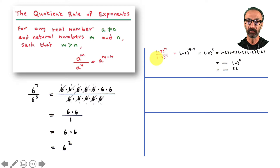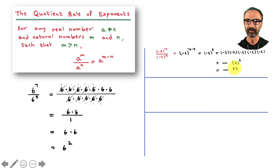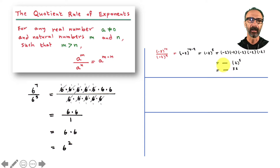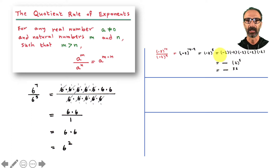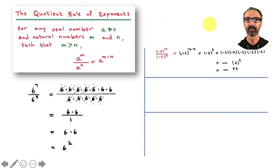Another example: negative 2 to the power 14 over negative 2 to the power 9 — subtract 14 minus 9 which is 5. Since I have an odd number of products with a negative, my answer should end up negative. Make sure you write the negative sign clearly — sometimes students write a tiny negative sign that doesn't look right. Your answer should be negative. If you want to evaluate all the way, that's negative 32.